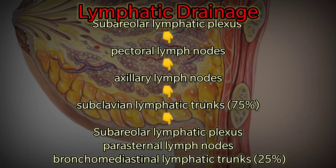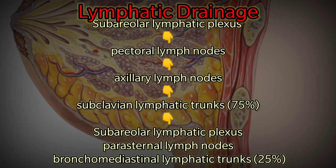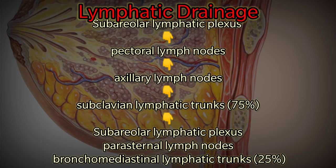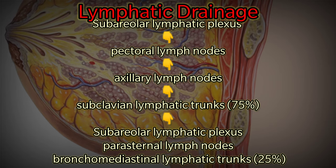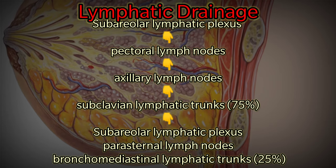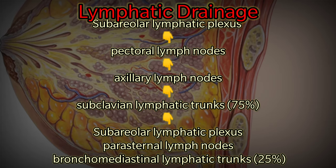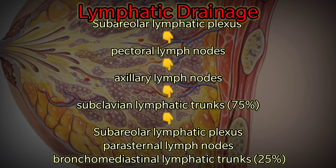Lymphatic drainage: the sub-areolar lymphatic plexus drains to pectoral lymph nodes, then to axillary lymph nodes, then to subclavian lymphatic trunks — accounting for 75% of drainage.